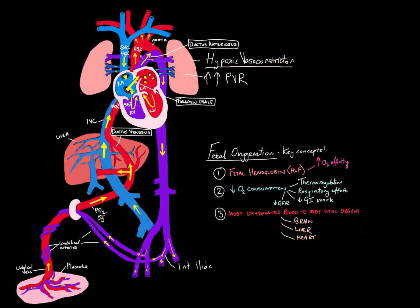To recap: the umbilical vein brings blood in; half goes to the liver, half shunts through the ductus venosus. Entering the IVC, it streams across into the left atrium through the foramen ovale, through the left ventricle, and out into the aorta — 60% to the head and neck, 30% to the body, and 10% to the heart. SVC blood, kept separate by the Coanda effect, enters the right ventricle and is ejected into the pulmonary artery. High pulmonary vascular resistance drives 90% of RV output through the ductus arteriosus into the descending aorta, feeding the body before returning to the placenta via the umbilical arteries.